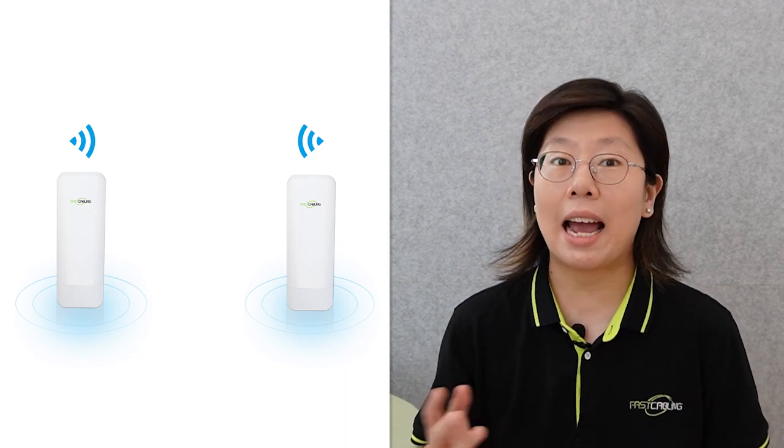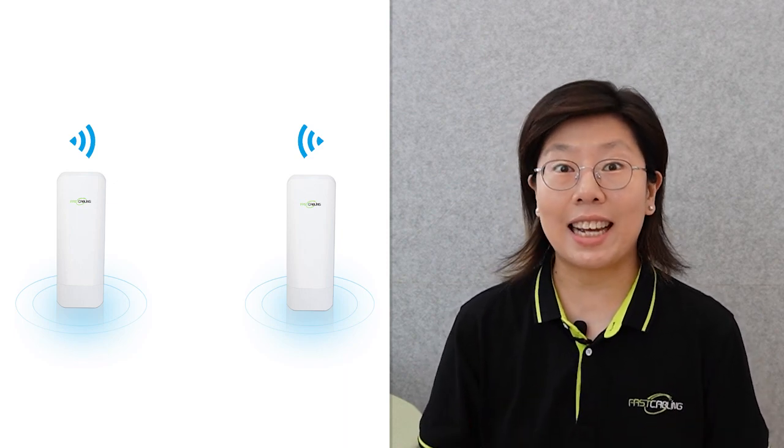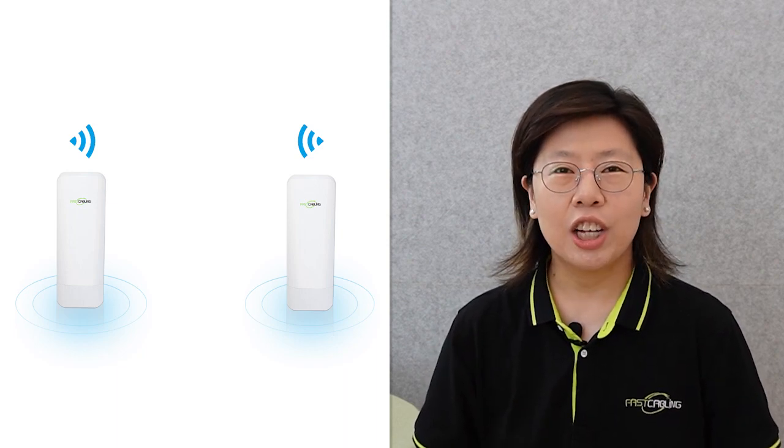Tip number 5: Use Wireless Bridges. Consider incorporating wireless bridges to overcome challenges posed by areas where physical cables are impractical for extending camera coverage. A wireless bridge establishes a wireless connection between a PoE camera and the network, effectively extending the reach of your surveillance network to areas that are difficult to cable. Wireless bridges allow you to cover expansive outdoor spaces and remote buildings, simplifying installation while maintaining the same level of connectivity and reliability as wired connections.